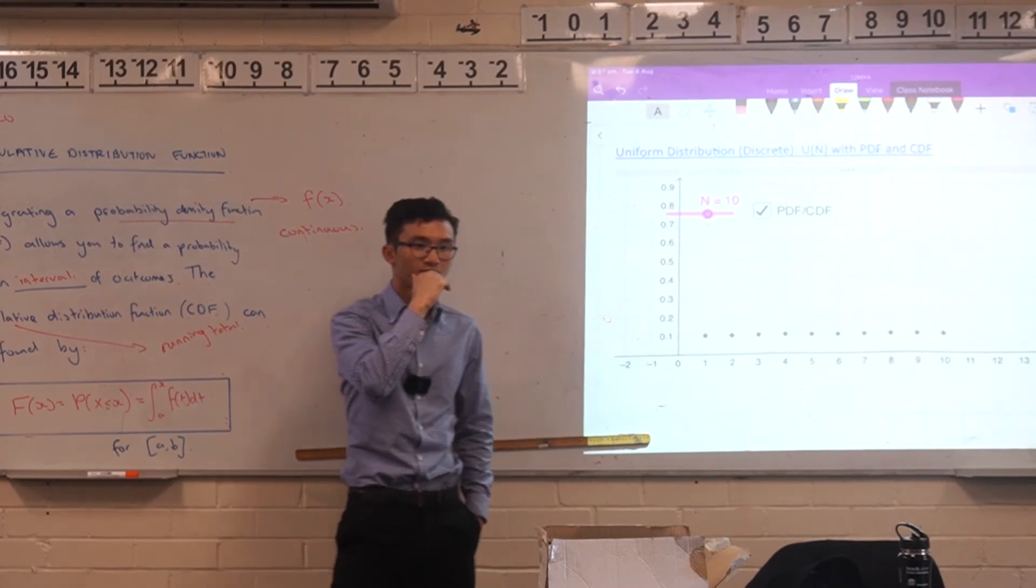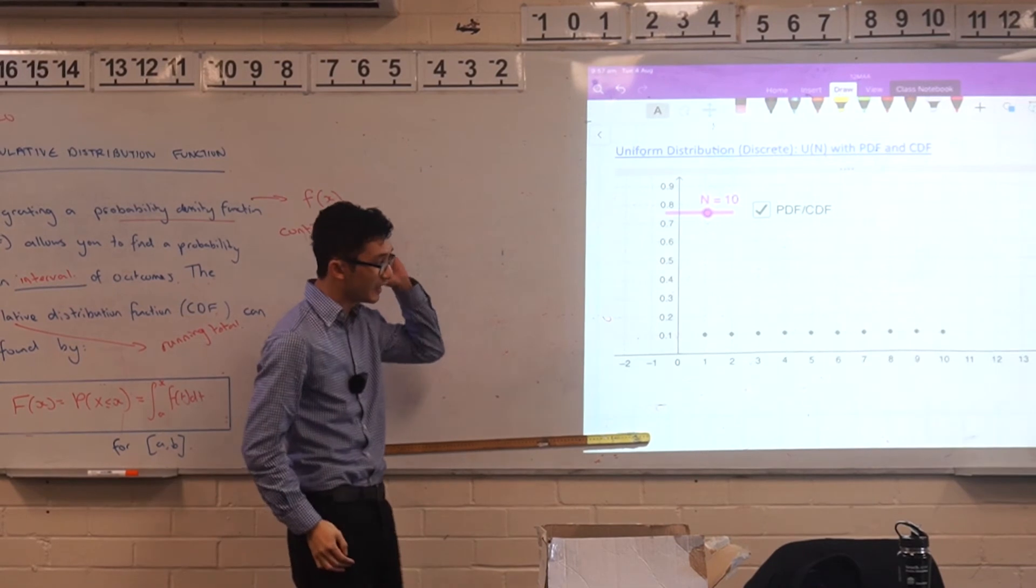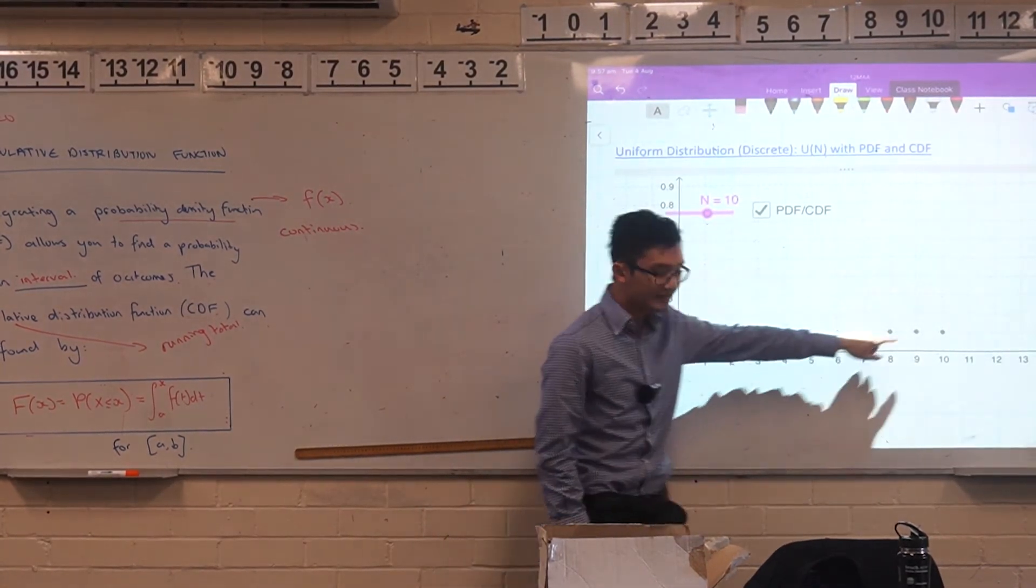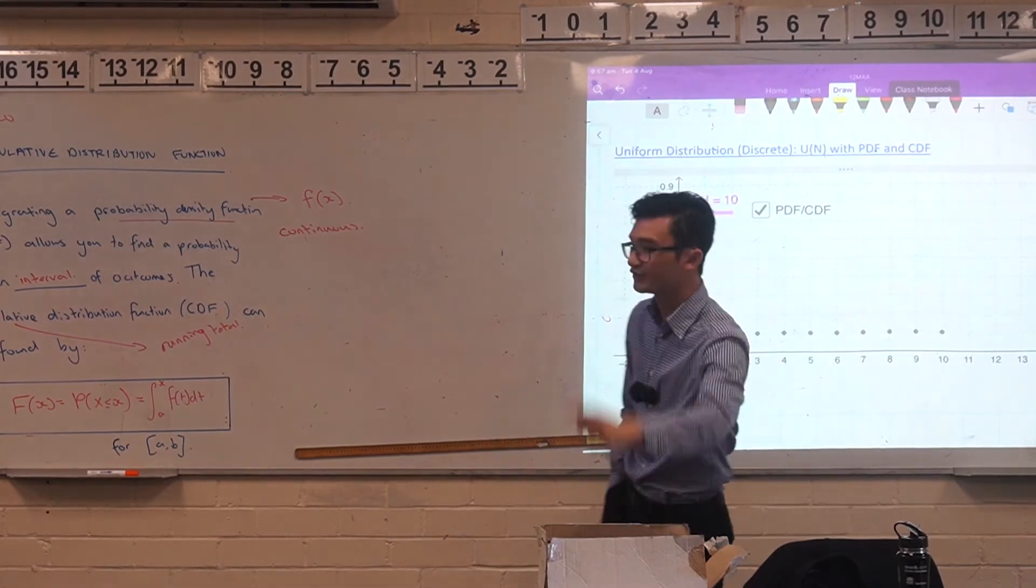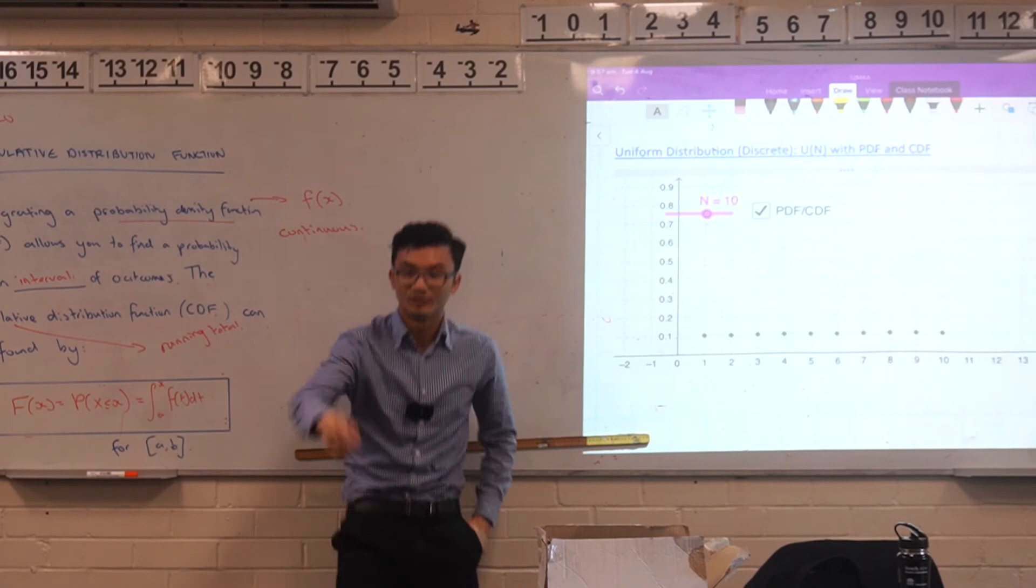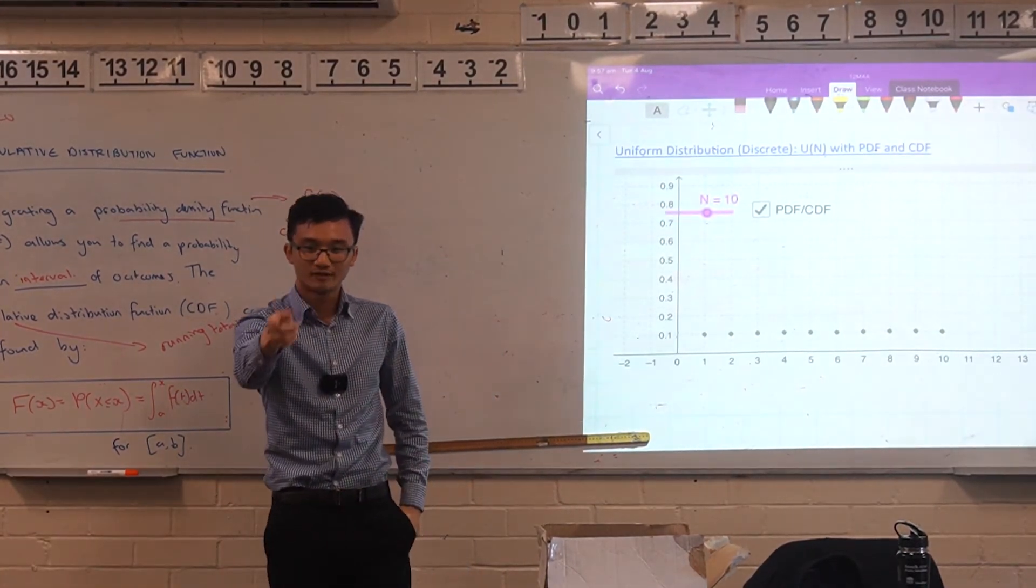Well, if you're adding the same amount on each, it's just going up the same amount. Can you see that? So if you're adding the same amount, because the running total should be adding all these each time, when I get to 10, what should the value be at the end? What does that mean? One. Why one? Because all the probabilities add up to one. Good.